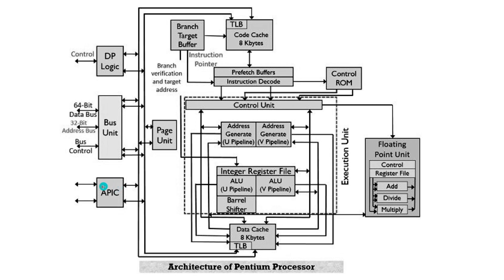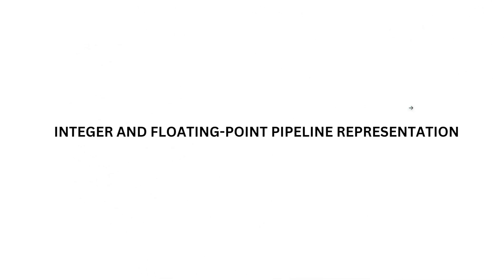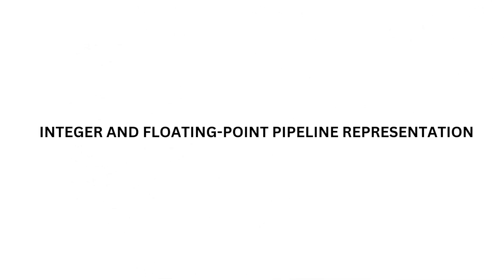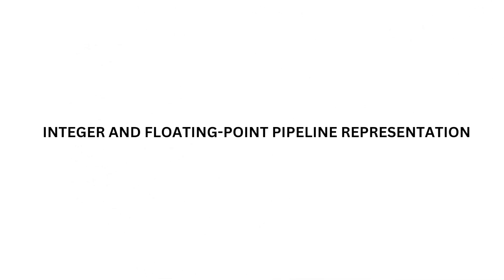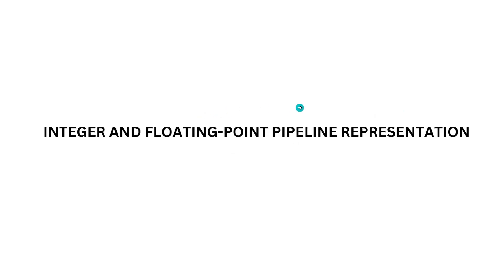Intel released multiple advanced processors after Pentium, including Pentium Pro, Pentium 2, Pentium 3, and Pentium 4. The Pentium processor is a microprocessor chip with two main pipelines — one for integer operations and one for floating-point operations.